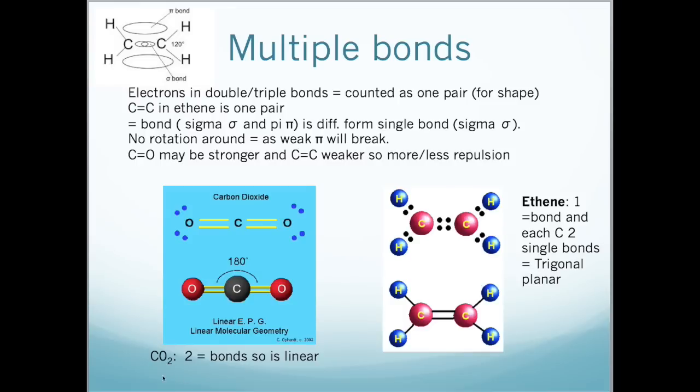I have an example of carbon dioxide and ethene. As we can see, we have the central carbon atom which is bonded to two oxygens. Because there are two bonds, even though they are double, we only count them as one bond, which means that it will have a linear shape so the bond angle will be 180 degrees. In ethene, the carbon-carbon double bond counts as one, but we also have the carbon-hydrogen bonds, which means that the shape will be trigonal planar.